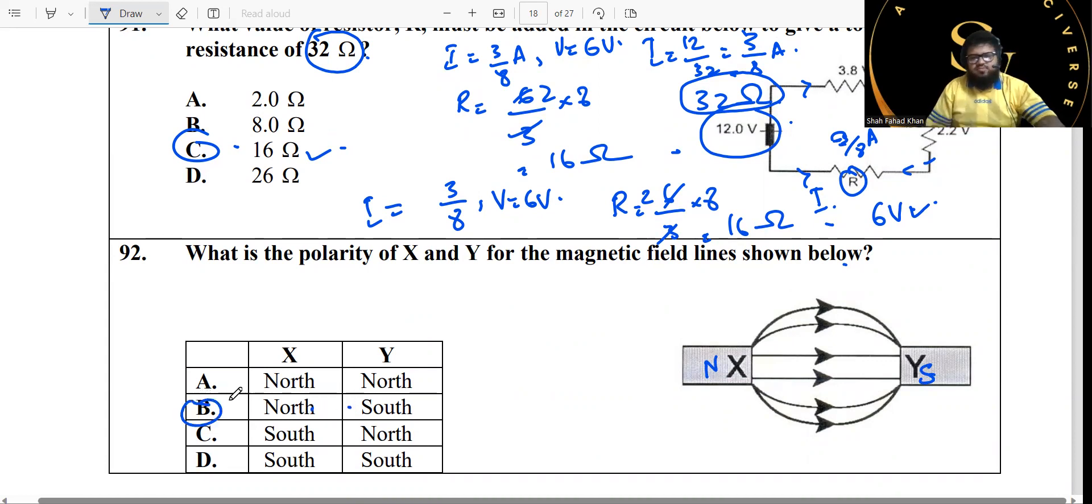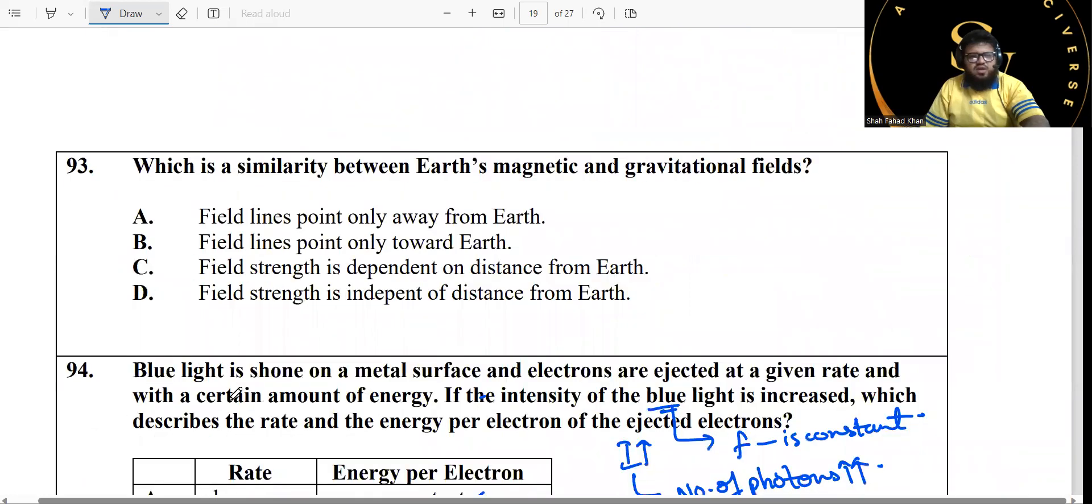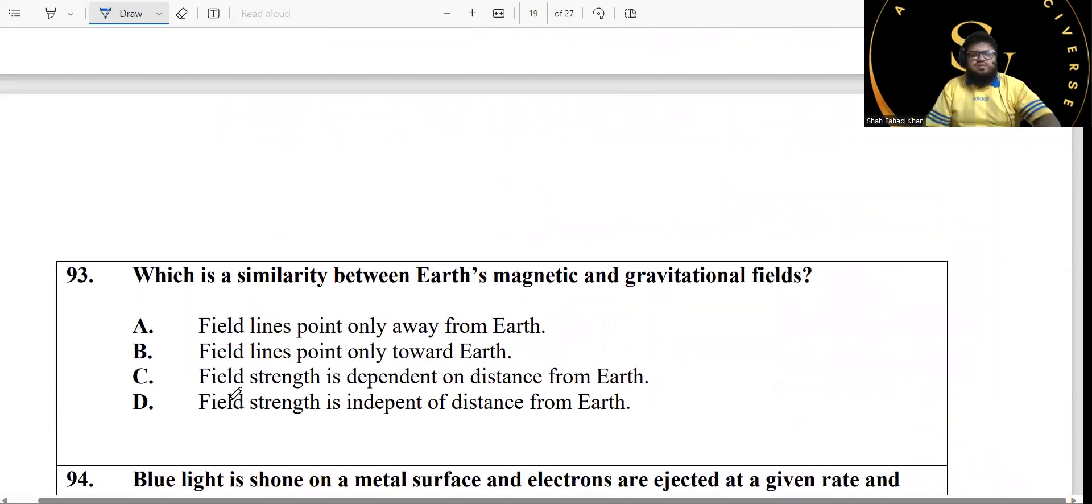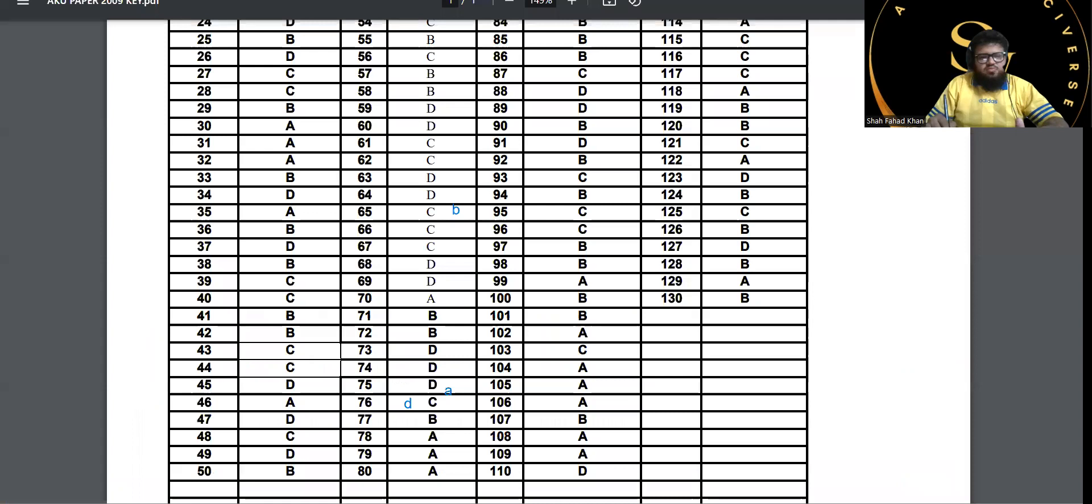Moving on, 93: what is the similarity between Earth's magnetic and gravitational fields? Now we are talking about Earth only, not talking about any other planet, we're not talking about magnetic gravitational fields of a magnet and stuff. So they are dependent on the distance from the Earth, obviously, because the more you go away from the Earth, both of them have to become weaker, right?